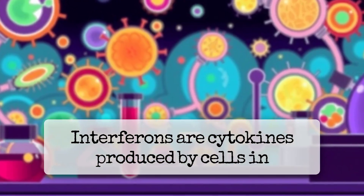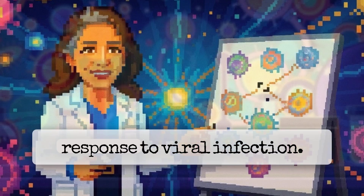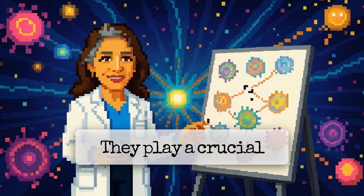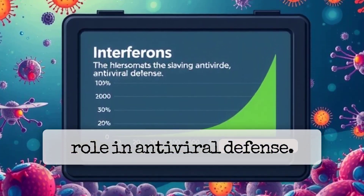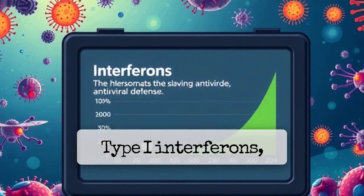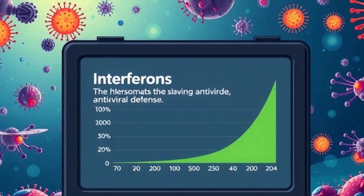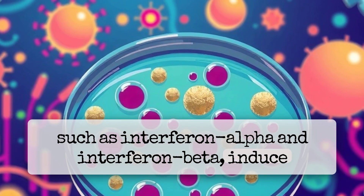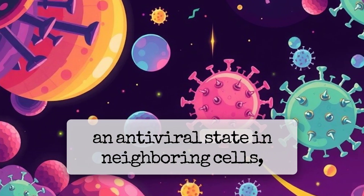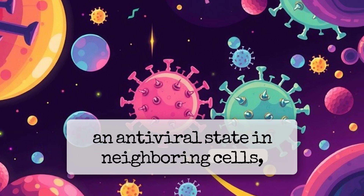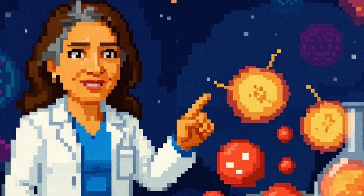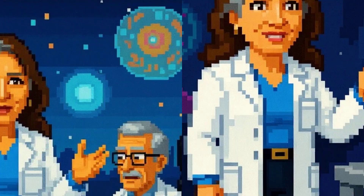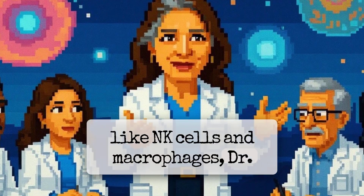Interferons are cytokines produced by cells in response to viral infection, and they play a crucial role in antiviral defense. Type 1 interferons, such as interferon alpha and interferon beta, induce an antiviral state in neighboring cells, inhibiting viral replication. They also activate immune cells like NK cells and macrophages.